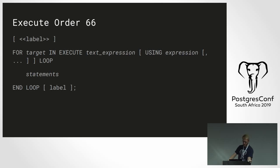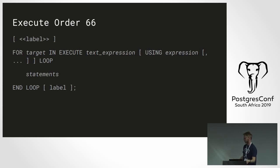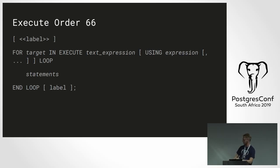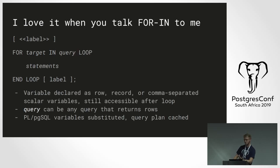You can also use FOR IN EXECUTE with a text expression. This is typically used when you want dynamic queries that can vary based on, for instance, which table you want to loop through. Note that when you use EXECUTE, it cannot cache the prepared plan because it has to re-parse the query every single iteration. So this tends to lead to slower loops than the previous example.